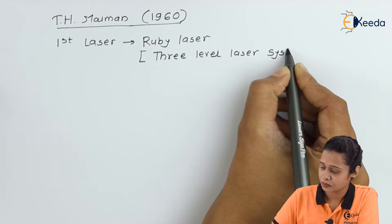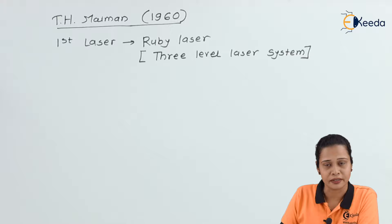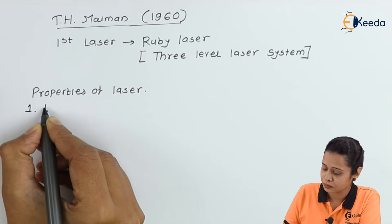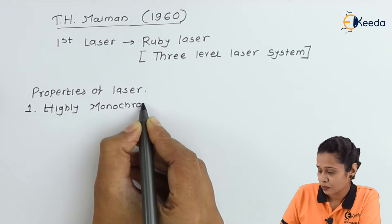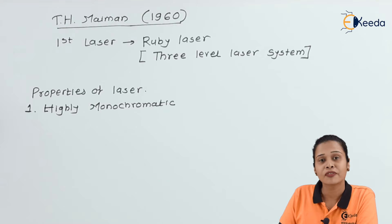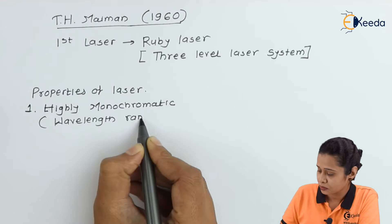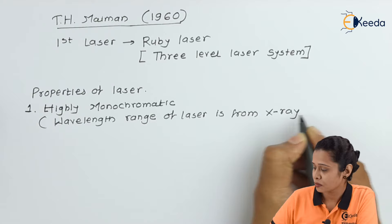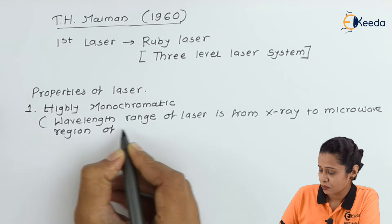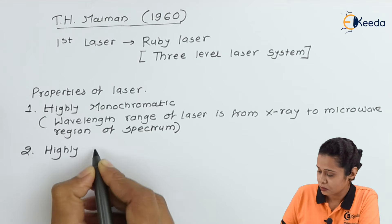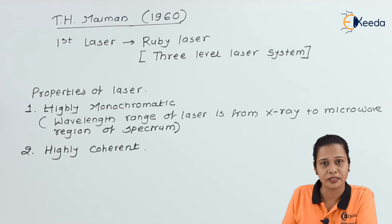Now we will see the properties of laser. First, laser is highly monochromatic, meaning there is only one wavelength. The wavelength range of laser extends from the X-ray to the microwave region. Second, laser is a highly coherent source, meaning all the rays have the same phase and they travel with the same phase.